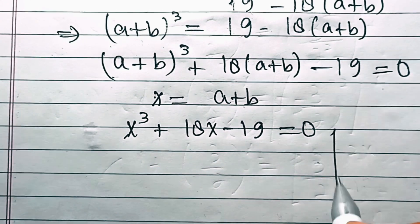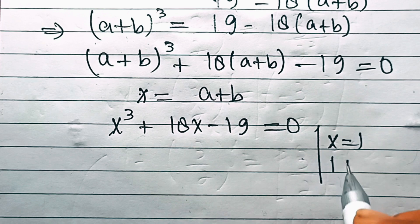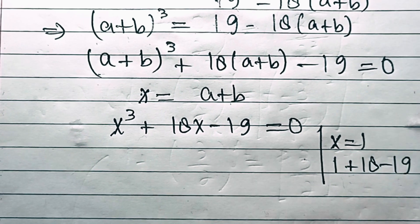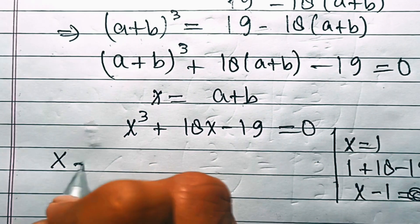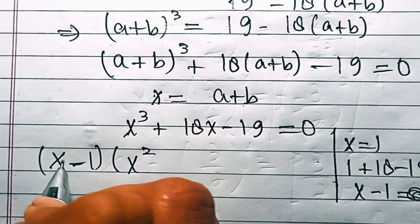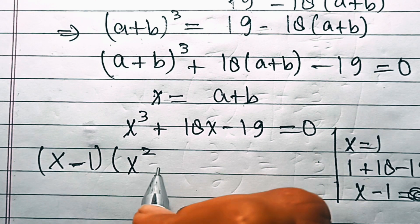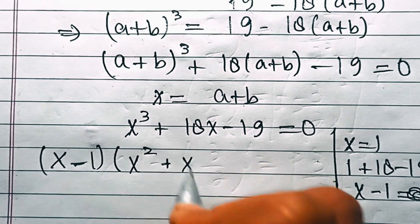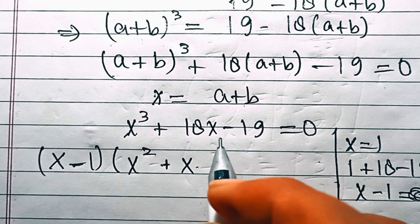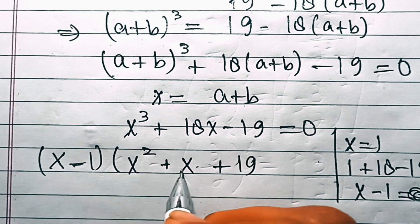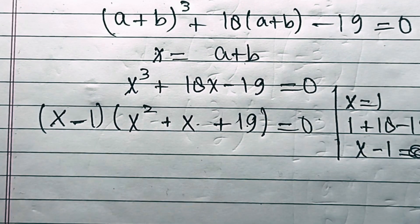This is a cubic equation. If we put x equal to 1, it becomes 1 plus 18 minus 19, which equals 0. So x minus 1 is a factor. We break down the equation as (x−1)(x² + x + 19) equals 0, verified by expansion: x·x² = x³, −1·x² = −x², x·x = x², −1·x = −x, and −1·19 = −19, giving 18x overall.